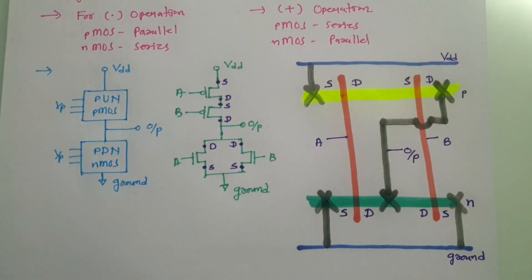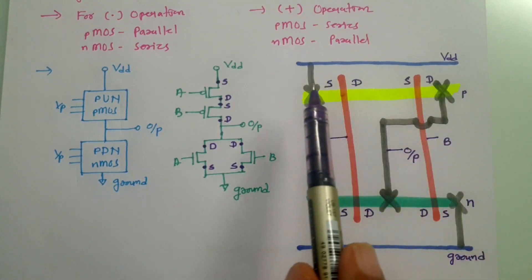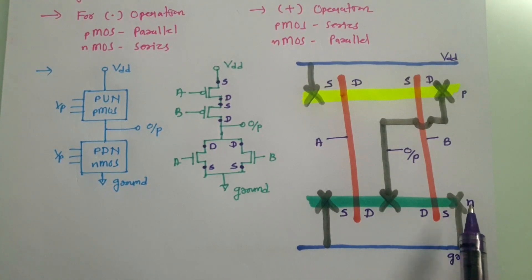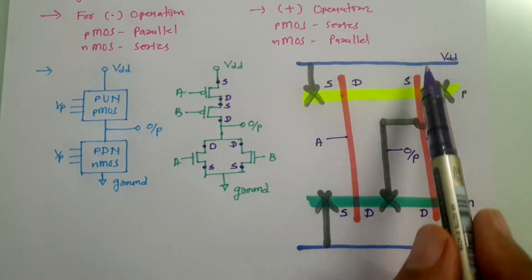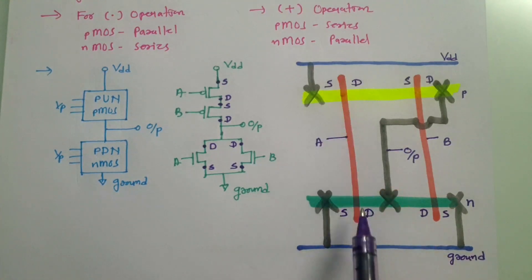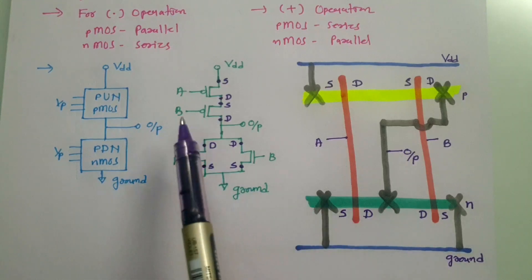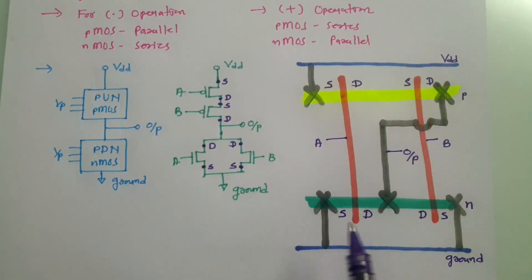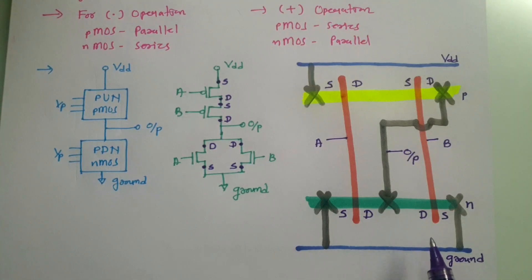This is how we draw the stick diagram of a CMOS NOR gate. To summarize: VDD and ground are in blue; P-type diffusion in yellow along VDD; N-type material in green along ground; polysilicon input layers in red based on the number of inputs; and source/drain connections in black with cross markings. Watch a few more videos in this series to master stick diagrams for any VLSI CMOS circuit.